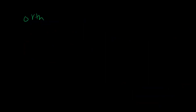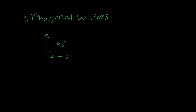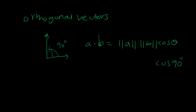Now let's move on to orthogonal vectors. Orthogonal means perpendicular. Two vectors are orthogonal when the angle between their tails is 90 degrees. If we compute the dot product of orthogonal vectors: magnitude of a times magnitude of b times cosine of 90 degrees equals zero, since cosine of 90 is zero. So a·b equals zero — whenever the dot product equals zero, the two vectors are orthogonal.